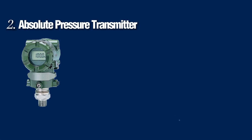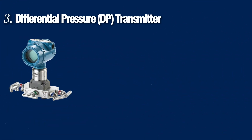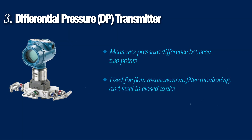The second type is the absolute pressure transmitter, which measures pressure against a perfect vacuum. It is ideal for vacuum systems and barometric measurements. The third is the differential pressure transmitter, which measures the pressure difference between two points. It is widely used for flow measurement and filter monitoring.